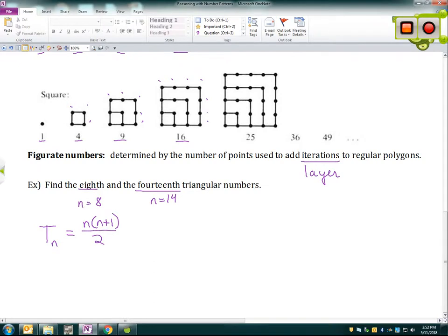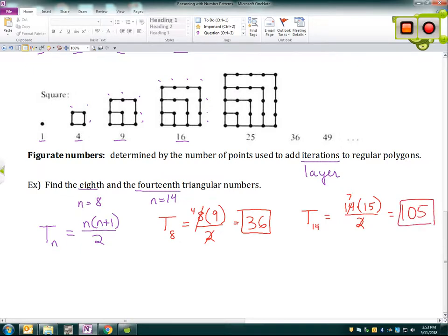And so then for the eighth triangular number, I'll let n be eight. So t sub eight equals eight times eight plus one is nine, and then I need to divide that by two, which, I'll reduce that to a four, gives me 36. So the eighth triangular number is 36, and for the last one, we want the 14th triangular number. So t sub 14 is going to be 14 times, and then 14 plus one is 15, and again, dividing by two, and I'm going to reduce here. So I have seven times 15, which is 105. So that's my 14th triangular number.